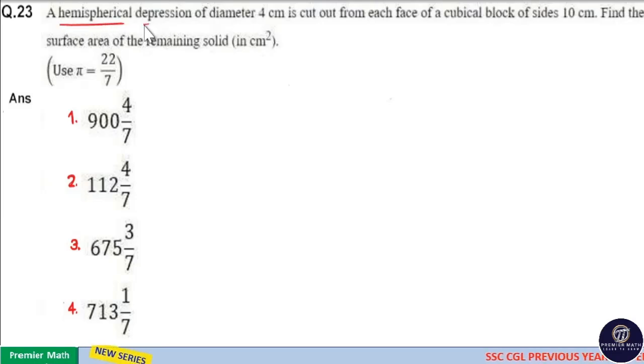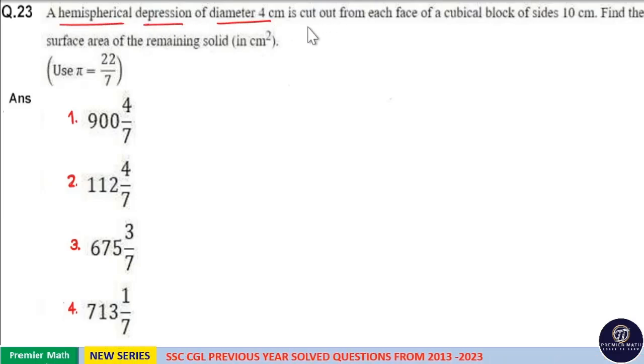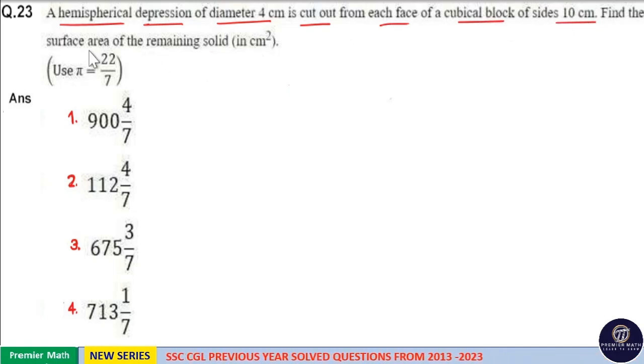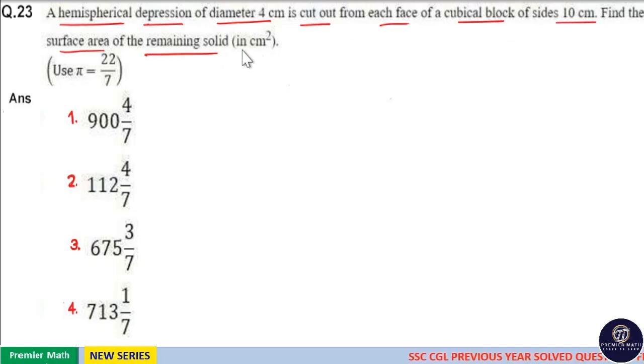A hemispherical depression of diameter 4 centimeter is cut out from each face of a cubical block of side 10 centimeter. Find the surface area of the remaining solid in centimeter square.